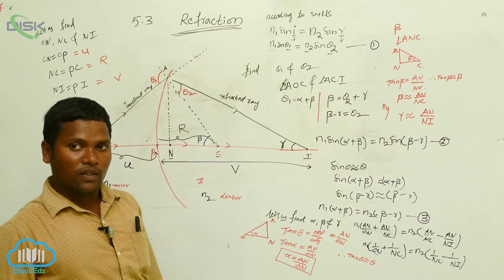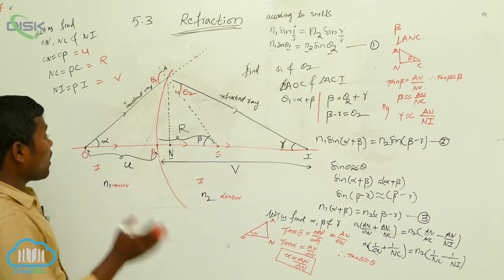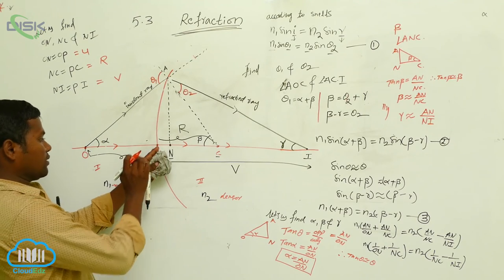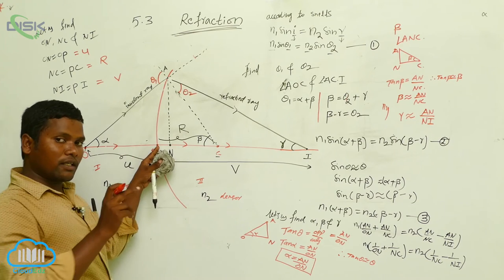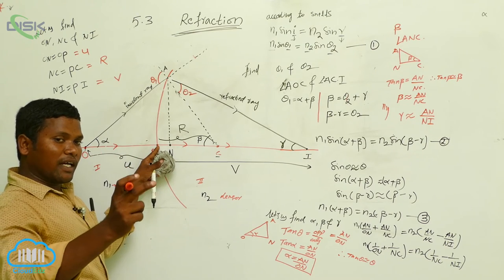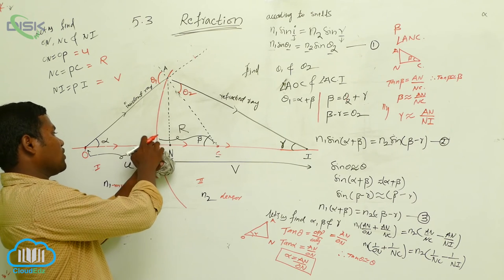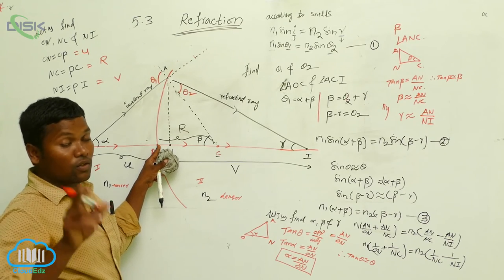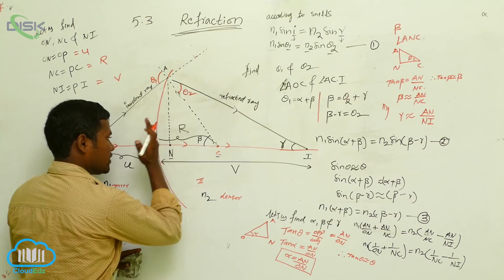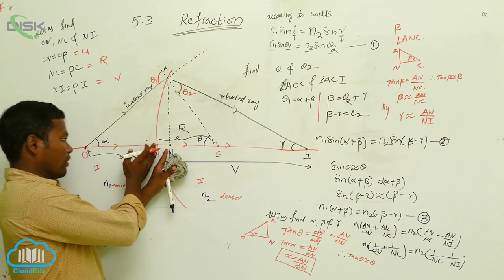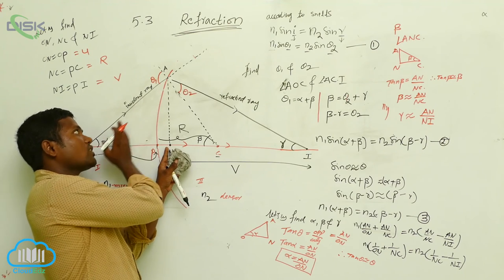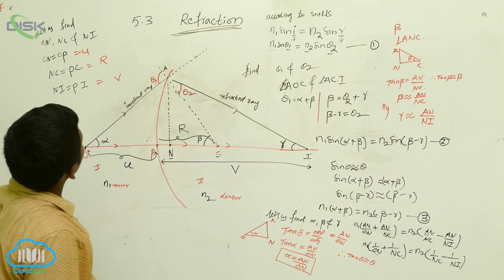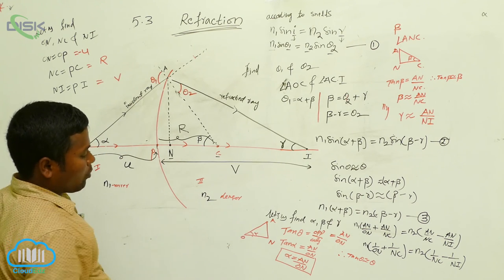Now I am going to apply the sign rules. Always measure from the pole point. Your incident ray comes in one direction, and the object is on the opposite side, so you have to consider a negative sign for U. These are the sign rules. Simply take them and apply in the equation N1 times (1/ON + 1/NC) equals N2 times (1/NC minus 1/NI), substituting U, R, and V.